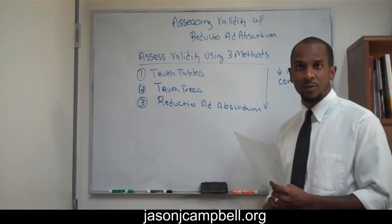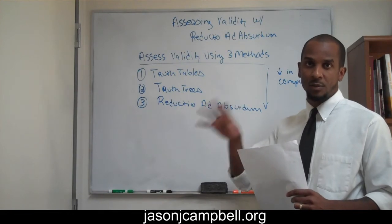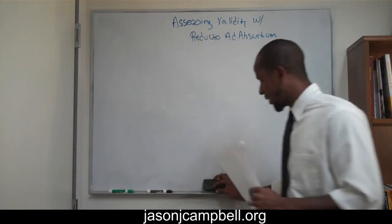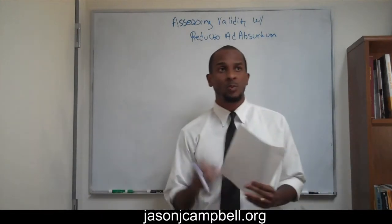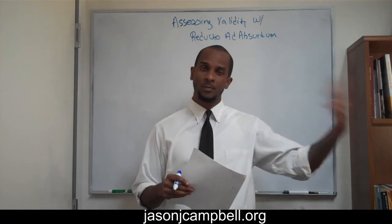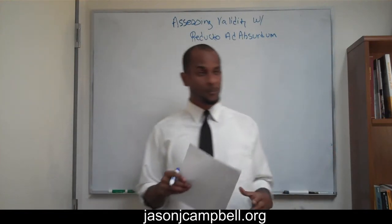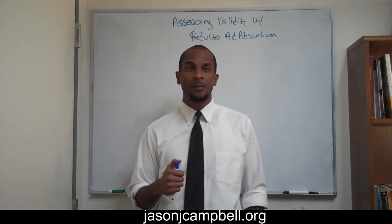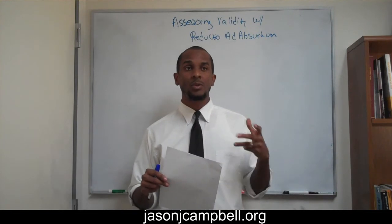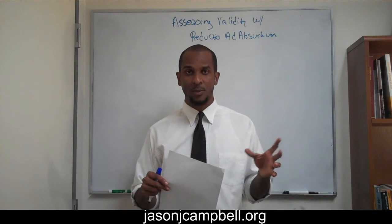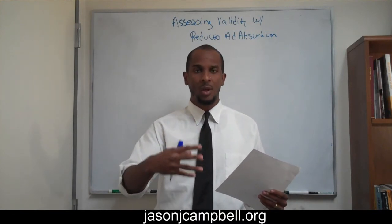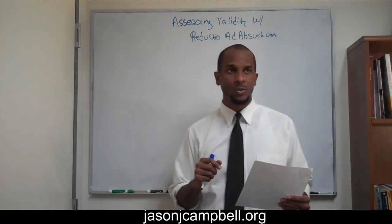What sense can we make of reductio ad absurdum, and what role does it play in the assessment of validity? The first thing to recognize: what does reductio ad absurdum mean? Reductio — the ability to reduce, reduction. Ad absurdum — to the absurd. So a reduction to impossibility, a reduction to absurdity. If you can reduce an argument to its contradiction, then we can say that the process we're using is reductio ad absurdum. I went over and deliberated several approaches to teach this, and I think this is the simplest approach to assessing validity.